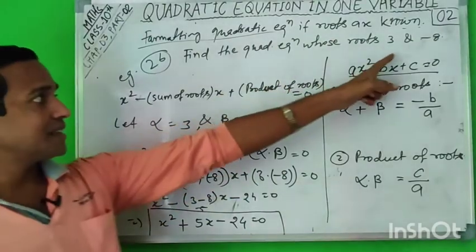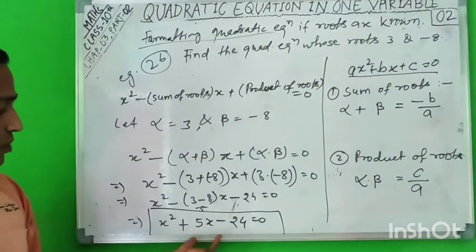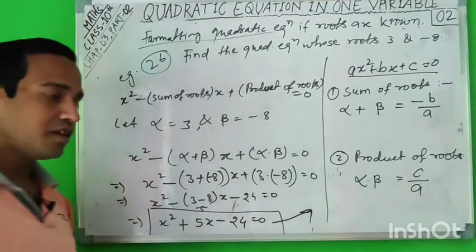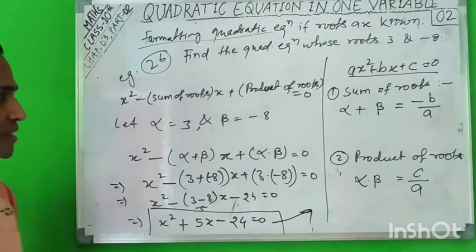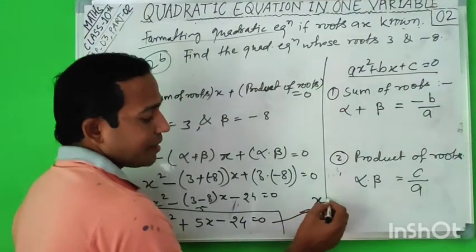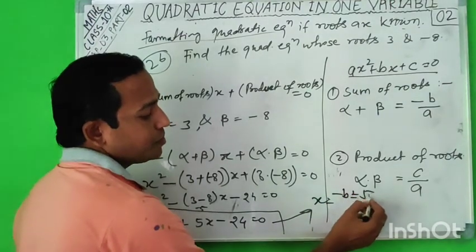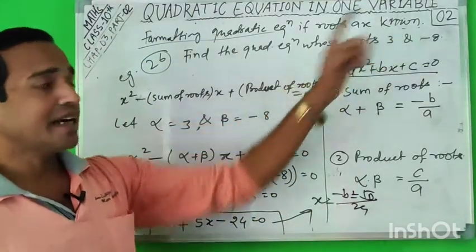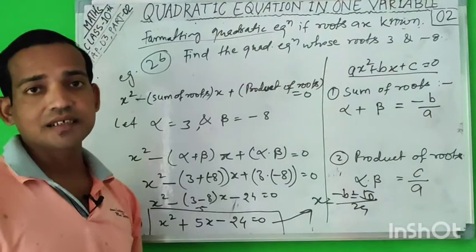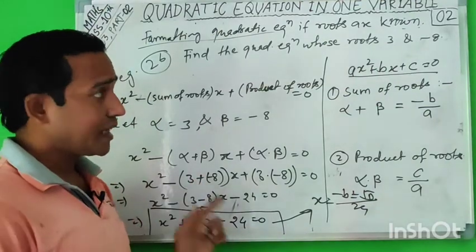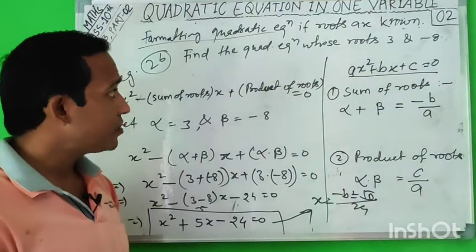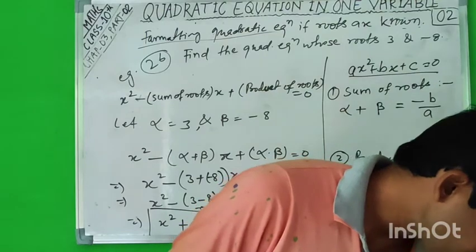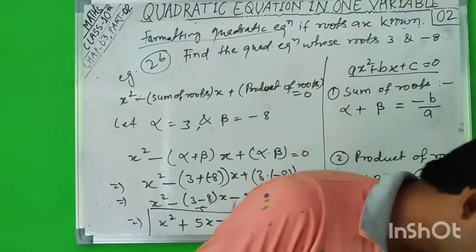Now suppose you are asked to find the solution of this quadratic equation x² + 5x - 24 = 0. Put the values into the formula x = (-b ± √(b² - 4ac)) / 2a and you will get the roots. You can cross-check that the roots come back as 3 and -8. All questions and examples in your book can be solved this way.